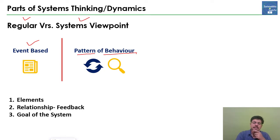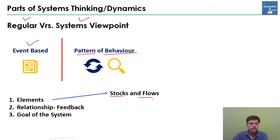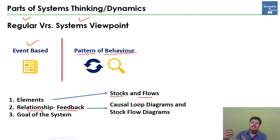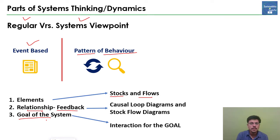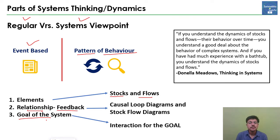In the first session we discussed that a system will have different elements, which may be in the form of stocks or flows. There must be relationships between these elements — they interact through feedback. To understand feedback, we have two mechanisms: the causal loop diagram and the stock flow diagram. The system also has a goal, and the complete feedback loop operates toward that goal. Today we will be discussing stocks and flows.